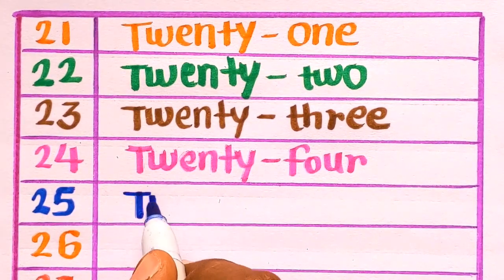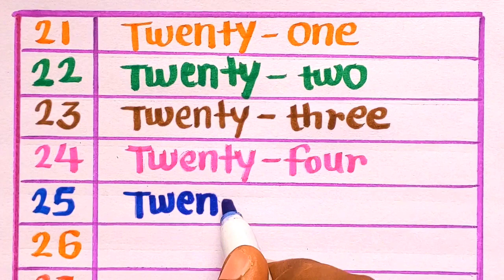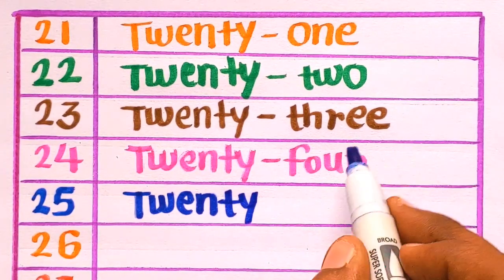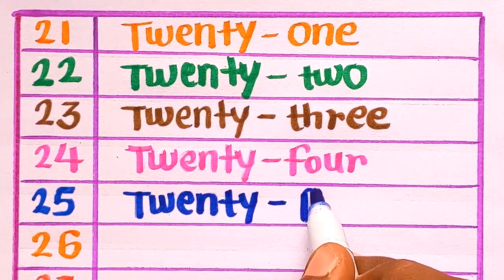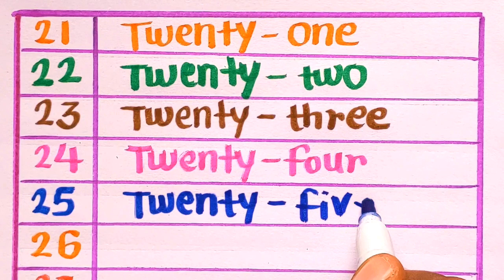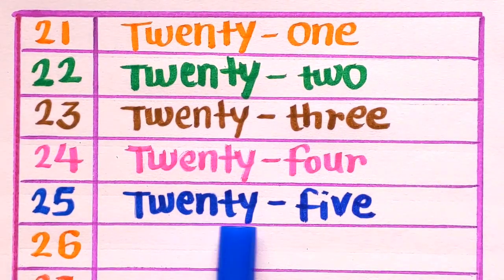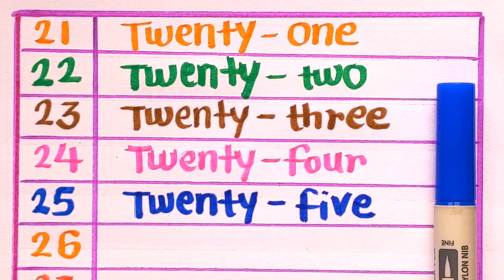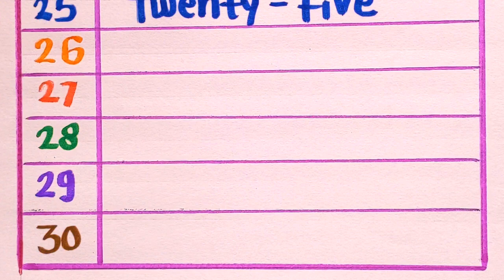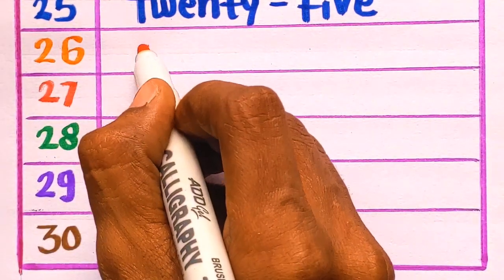T-W-E-N-T-Y-25. F-I-V-E-25, with the blue color. Next is 2-6-26.